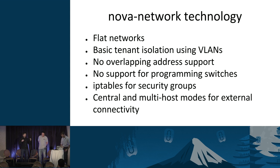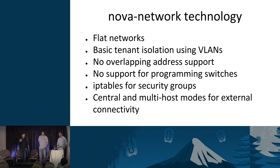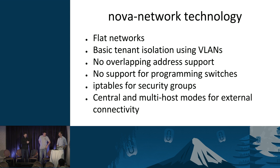What did Nova Network do? You could do flat networks, optionally with OpenStack providing DHCP on that network, or really basic tenant isolation using VLANs — though tenants didn't have any control over that. There's no support for overlapping address space, which is a big thing in Neutron where every tenant may want to create networks using the same private IP address space. There's no support for integration with your physical fabric, and no SDN controller integration. It used IP tables for security groups and had both central and multi-host modes for external connectivity.